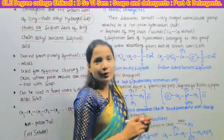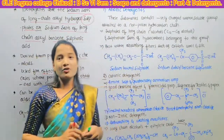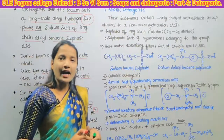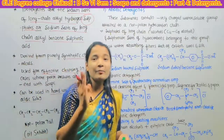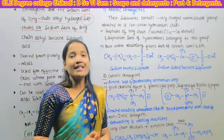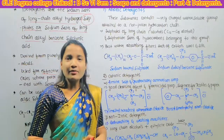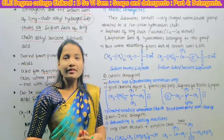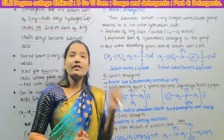Let's move to the classification of detergents. Detergents can be divided into three main categories: first, anionic detergents; second, cationic detergents; and third, non-ionic detergents.